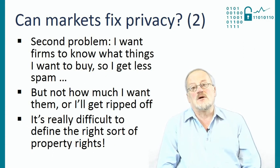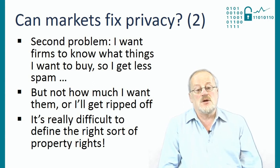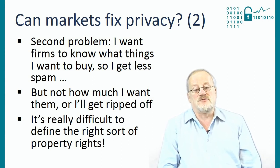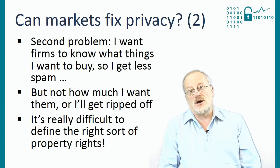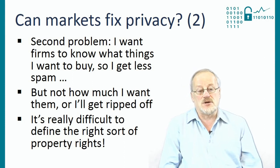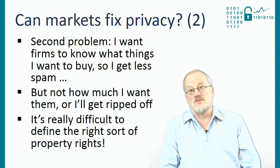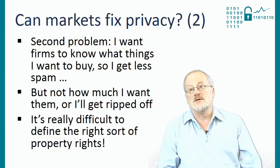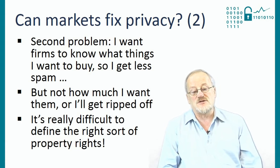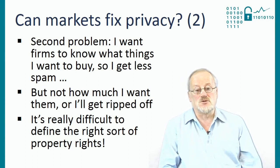The second problem, which emerged during the 1990s at the beginning of the dot-com boom, is that ideally I want firms to know what things I want to buy and what not to buy, so that people don't bother me with spam and marketing calls for things I'm never going to purchase. But I don't want firms to know how much I want these things, or I'm going to get ripped off — if they know I really, really want something, they'll charge me everything I've got for it. It's very difficult to define the right sort of property rights for markets to work.